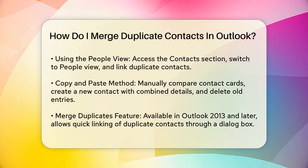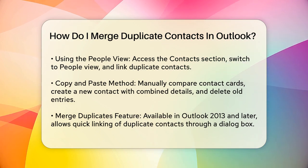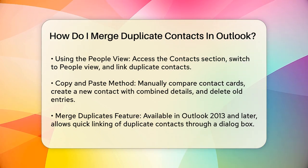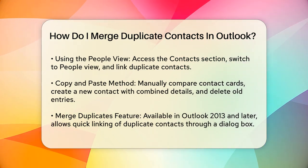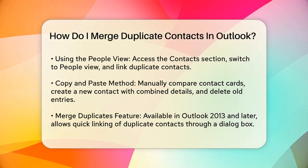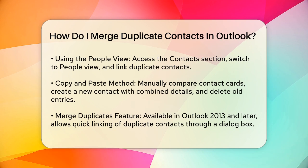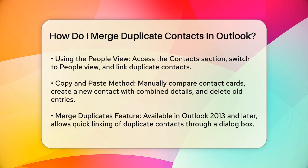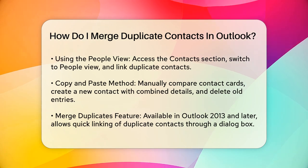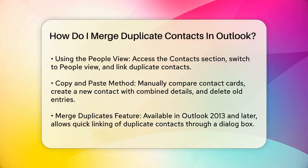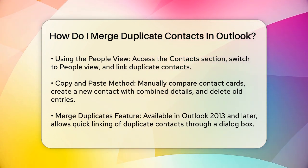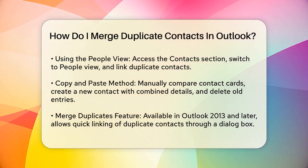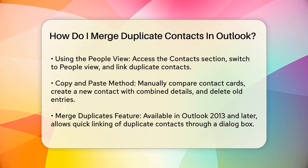For a more manual approach, open all the contact cards that represent the same person. Compare their information and create a new contact with all the details from the duplicates. Save this new contact and then delete the old, outdated contact cards. This method works well for small contact lists.